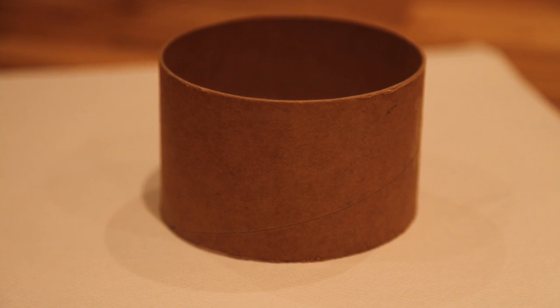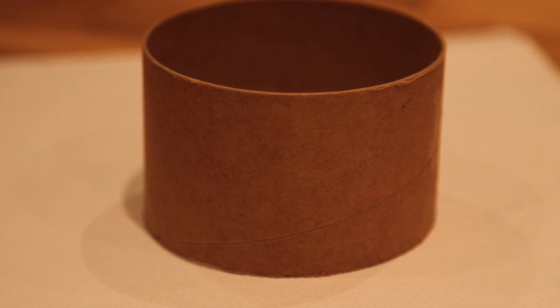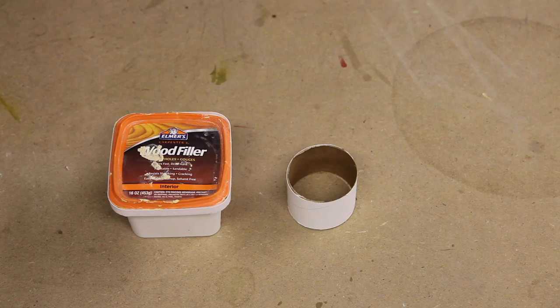In most model rockets, rolled paper tubes will be used. These have seam lines between the overlapping pieces of paper, so if they are not filled, they will appear after painting.